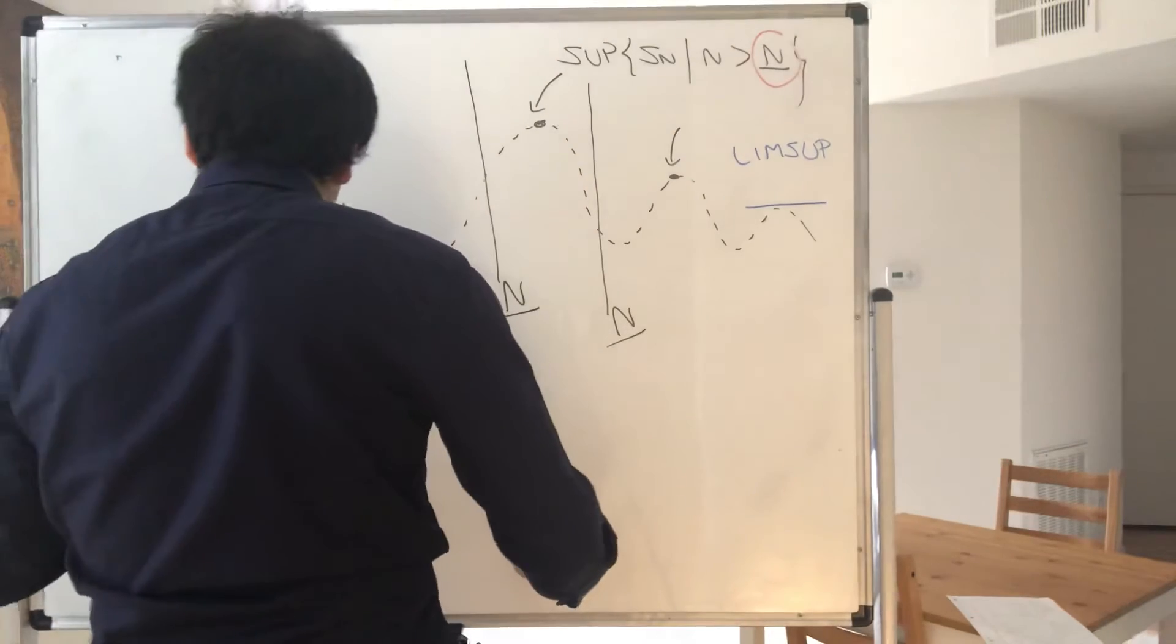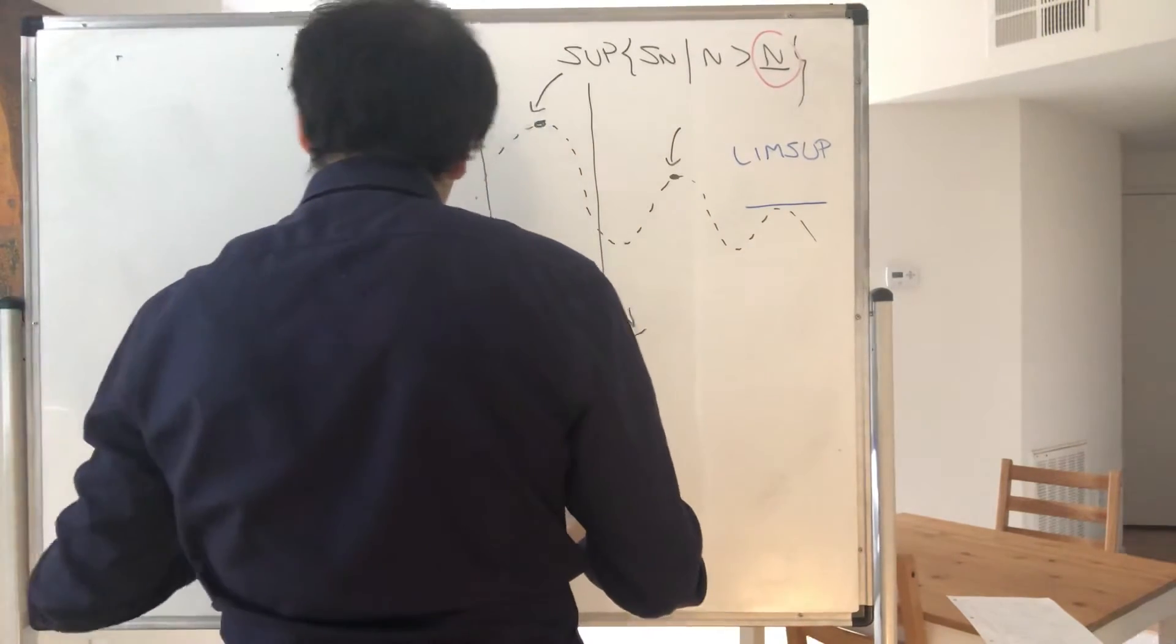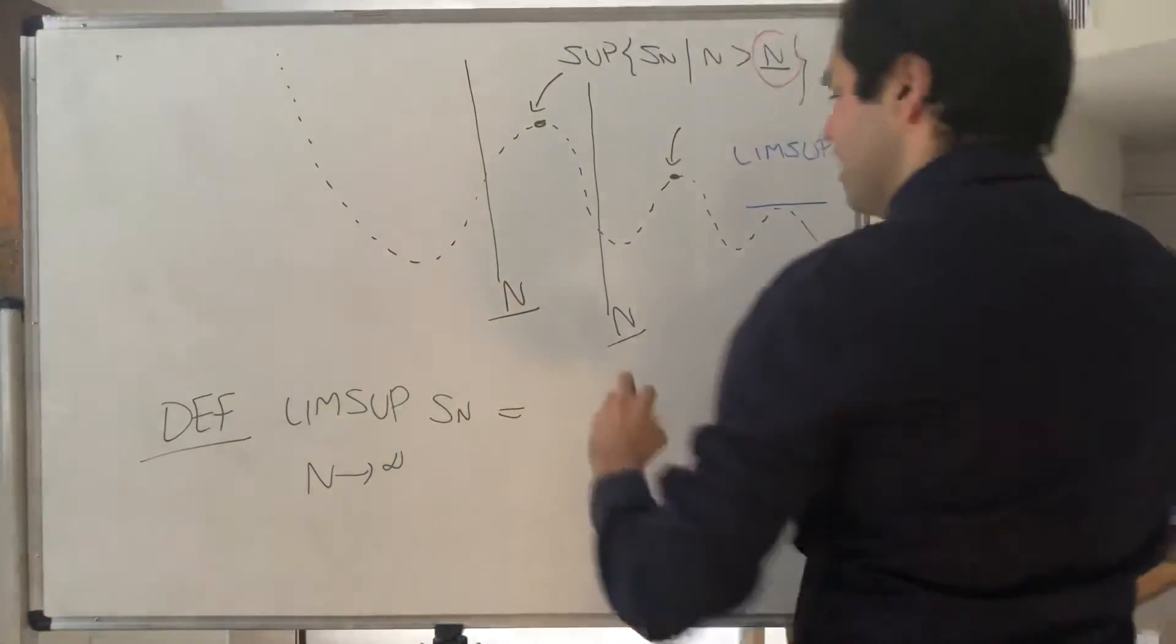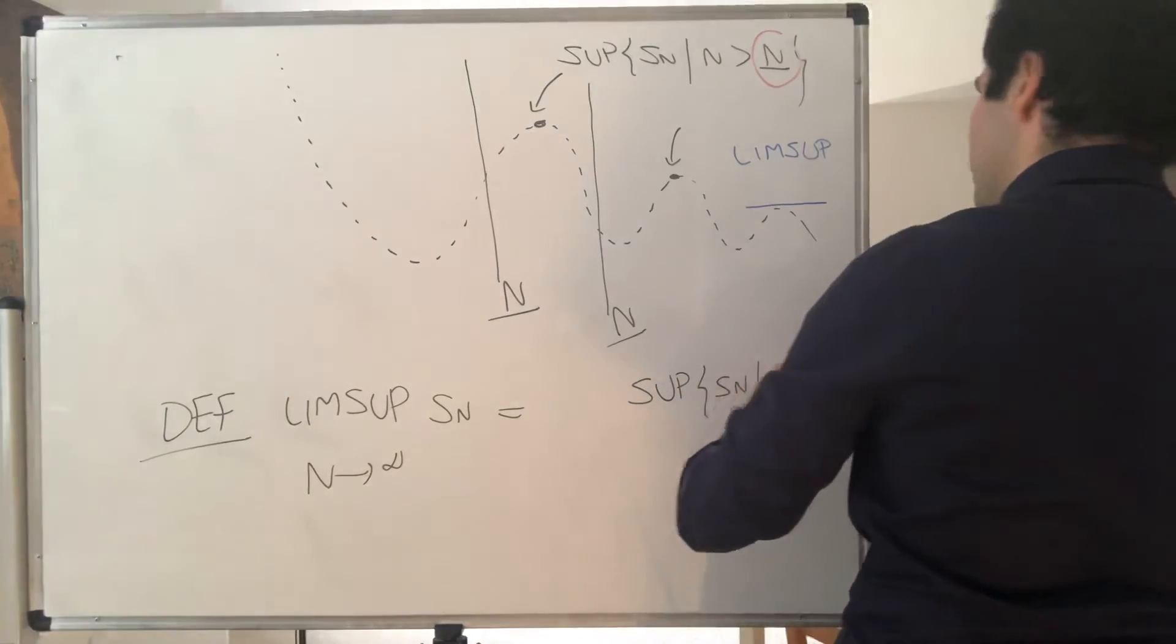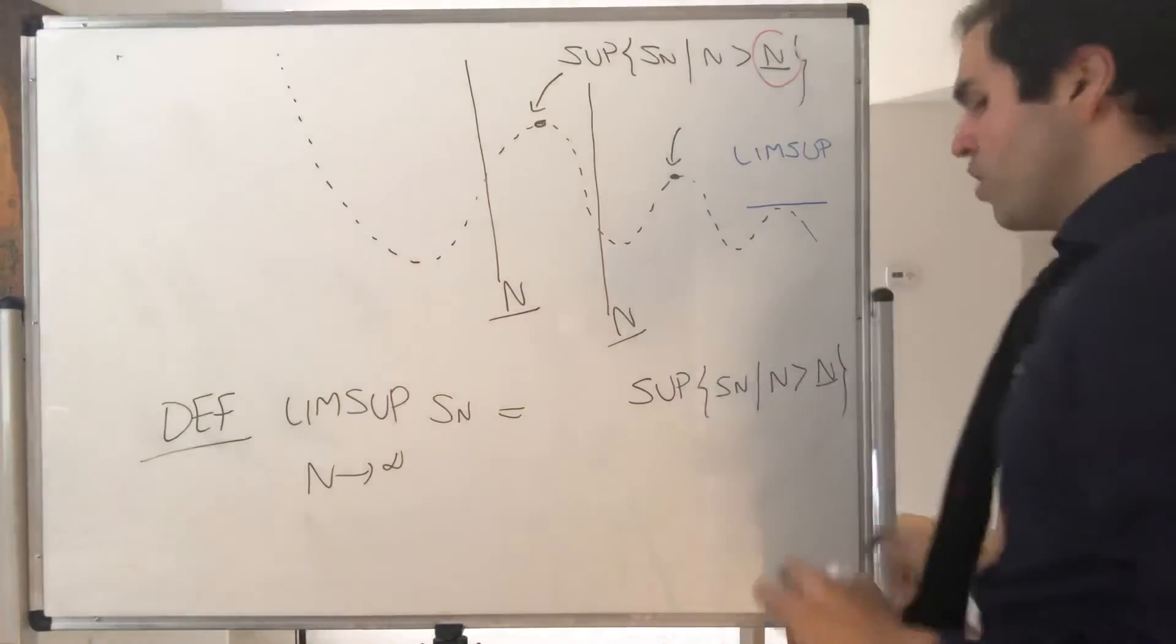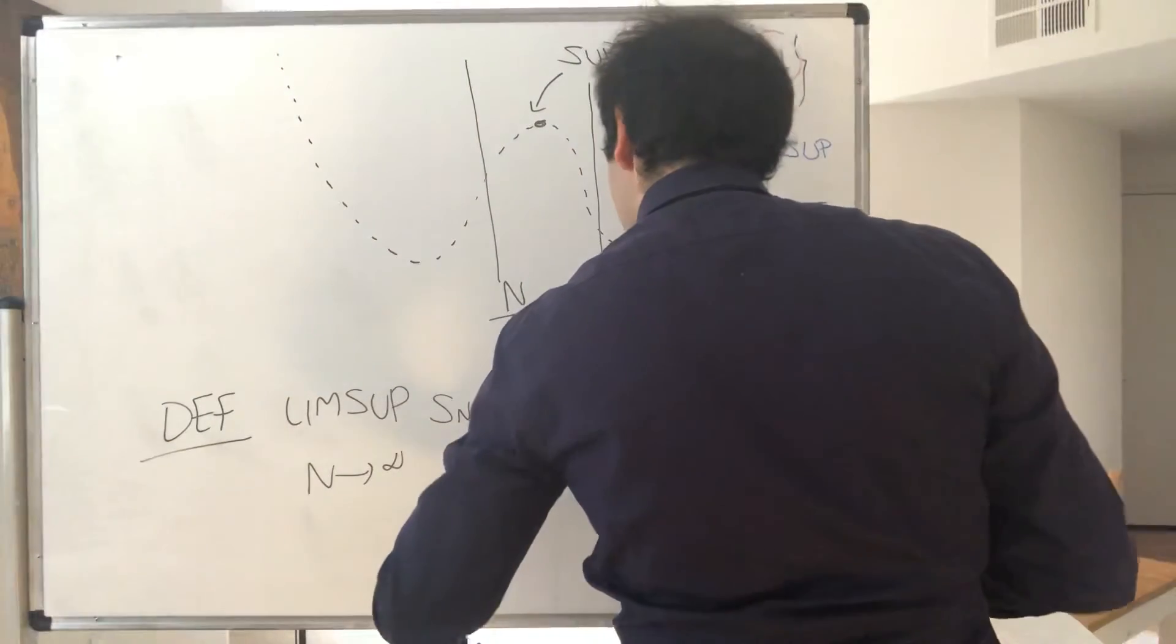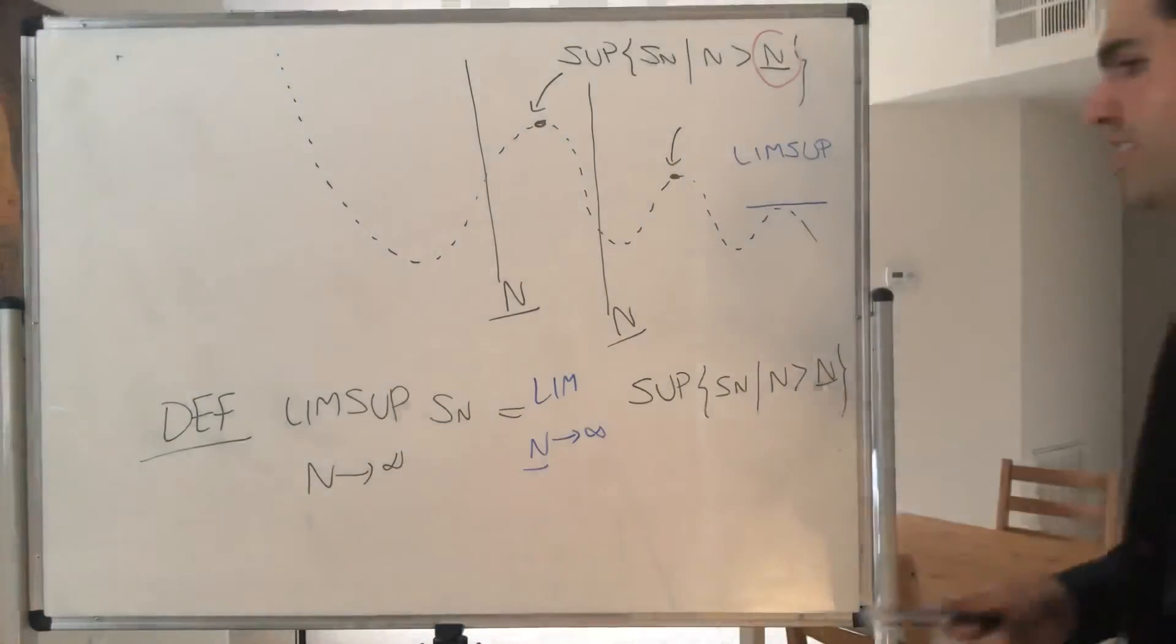So the definition, the limsup as N goes to infinity of Sn is the supremum of Sn after that threshold, but where that threshold is very big, as we let that threshold go to infinity.